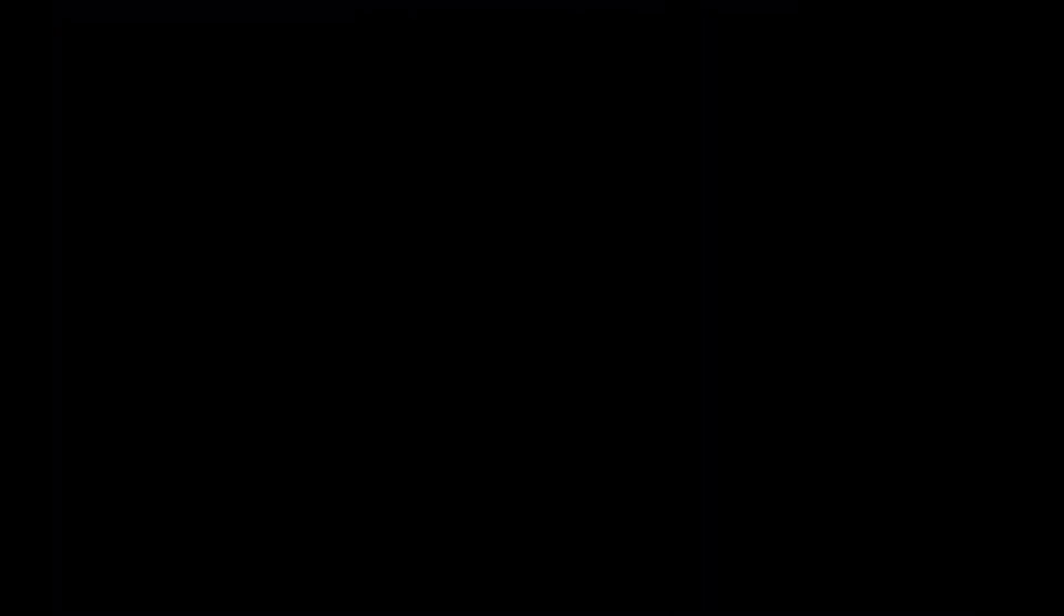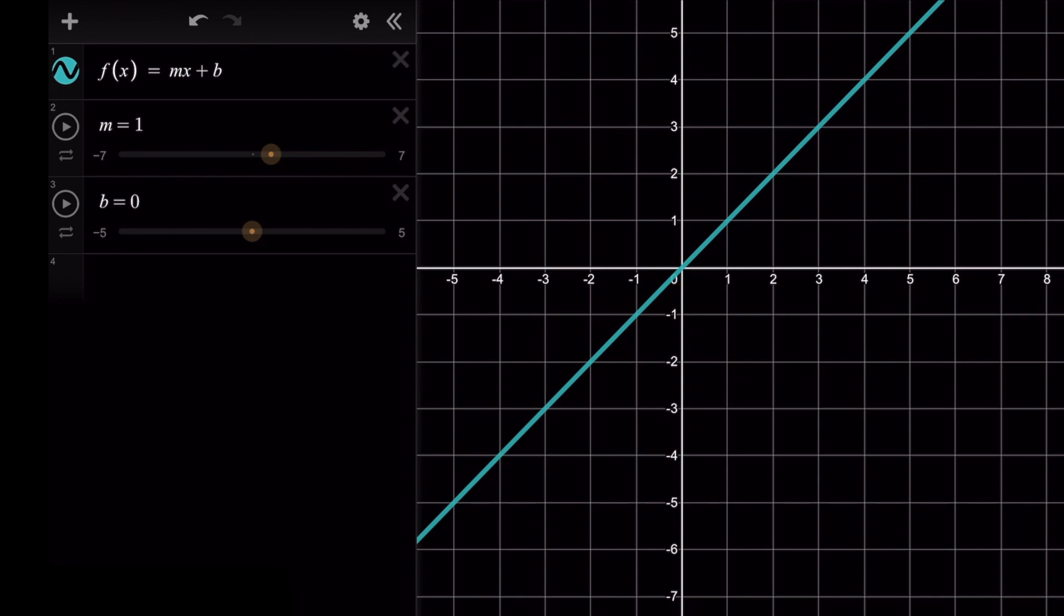So let's look at a graph of a line on Desmos. I have it set up here so that we can change m and b and see how the graph behaves differently.